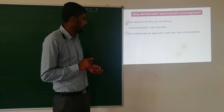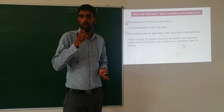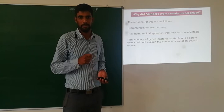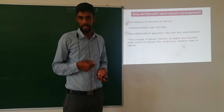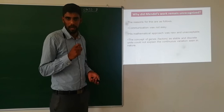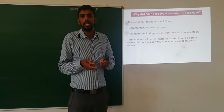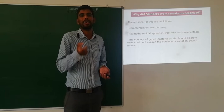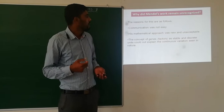Next, the concept of factors — Mendel called them factors, now called genes — as stable and discrete units could not explain continuous variation seen in nature. Mendel says that in F1 progeny the offspring is exactly similar to one of the parents, but this type of result cannot be seen in all organisms, especially animals or human beings, where children show variation from both parents.